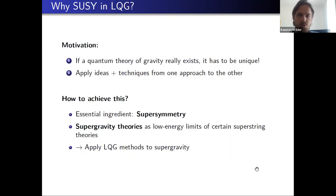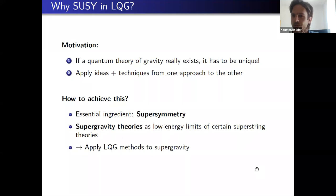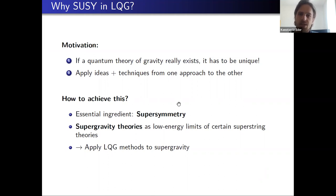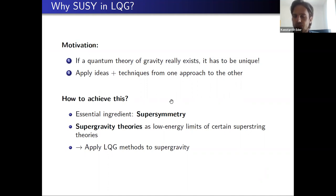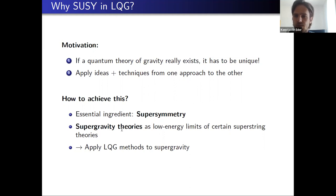My motivation was to combine loop quantum gravity with the concept of supersymmetry, because we have two very prominent approaches to formulate a quantum theory of gravity: superstring theory and LQG. If a quantum theory really exists, it has to be unique, so there must be a relation between these two approaches. Since supersymmetry plays an essential role in superstring theory — with supergravity theories appearing as low-energy limits of certain superstring theories — the first starting point to find such a link would be to apply LQG techniques to supergravity. This was the guiding idea of my work.